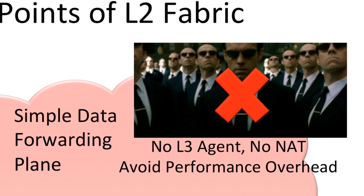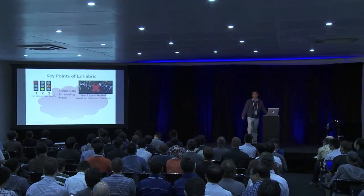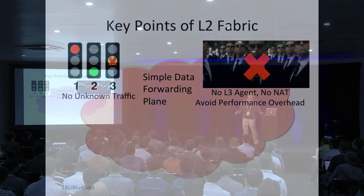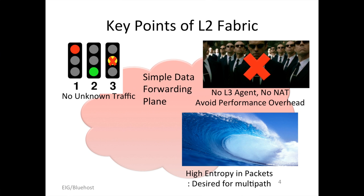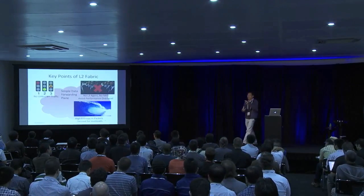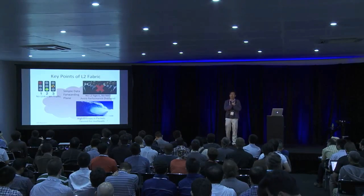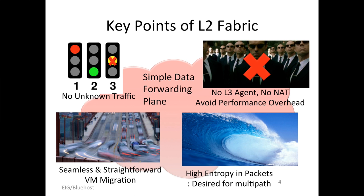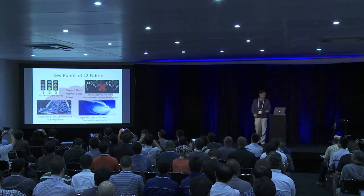Remember the movie Matrix? Remember how Neo dealt with the huge number of clones of Agent Smith? He ran away — he just avoided them. Don't face them. Third point: we would like to keep high entropy in the packet. One important reason is we want to utilize this variety of information for the underlying L2 layer multi-paths. We don't want to lose variety. This kind of simple L2 fabric very naturally helps us achieve seamless and straightforward VM migration.